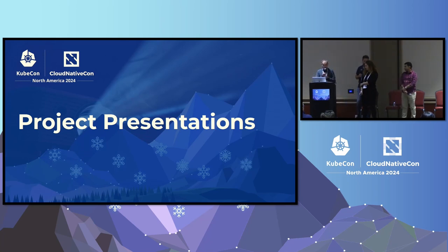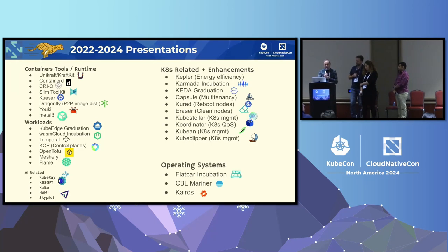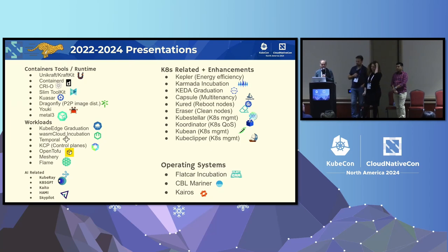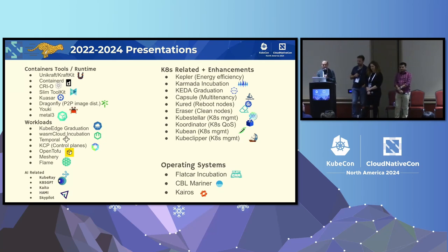I'll talk a little bit about the project presentations that we've had in TAG Runtime. Lots of logos around the different areas within the scope of TAG Runtime. We've had a few in the last maybe six months related to AI because there's been a lot of hype around that. Some of the examples are CubeRay, KubeGPT, SkyPilot, Kato, and Hami. Lots of activity — we encourage everyone to join and engage with projects, and if you're familiar with one of these, they can also come back and present.